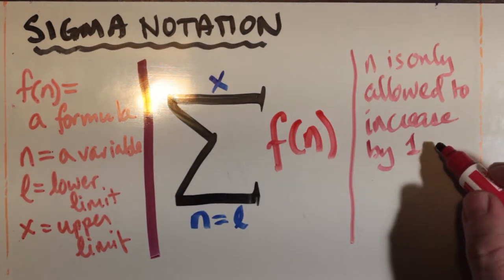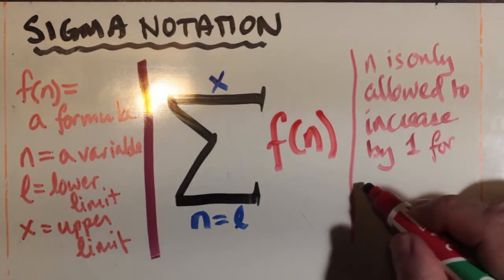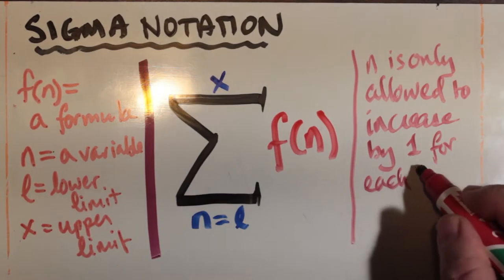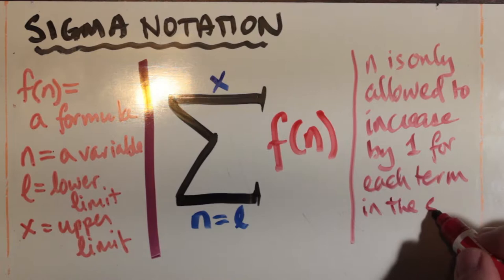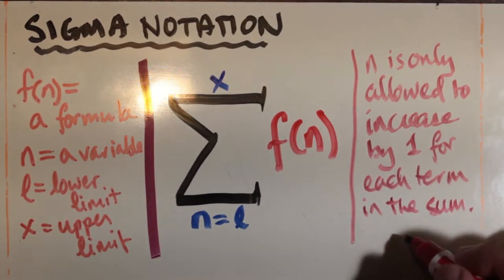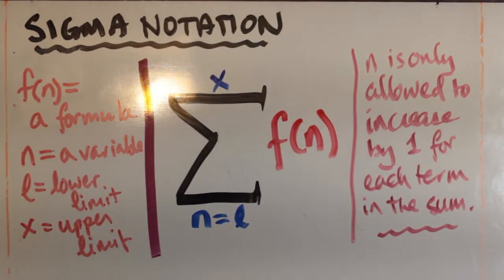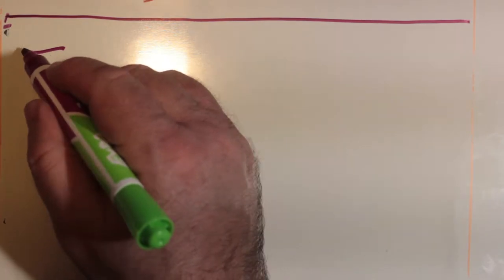n is only allowed to accept whole number values, meaning that it has to belong to the set of natural numbers, so not only just whole number values, but positive whole number values. And it's only allowed to increase by one for each term in the sum.